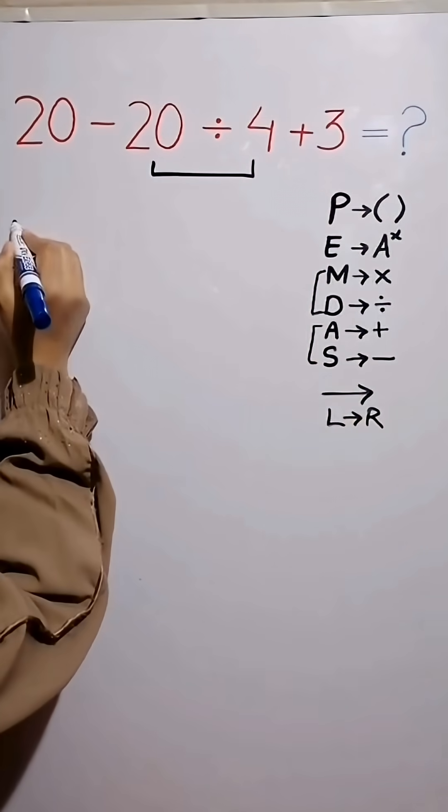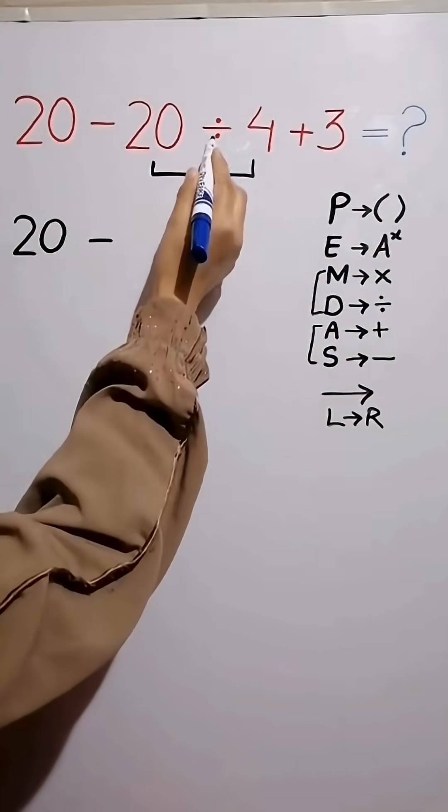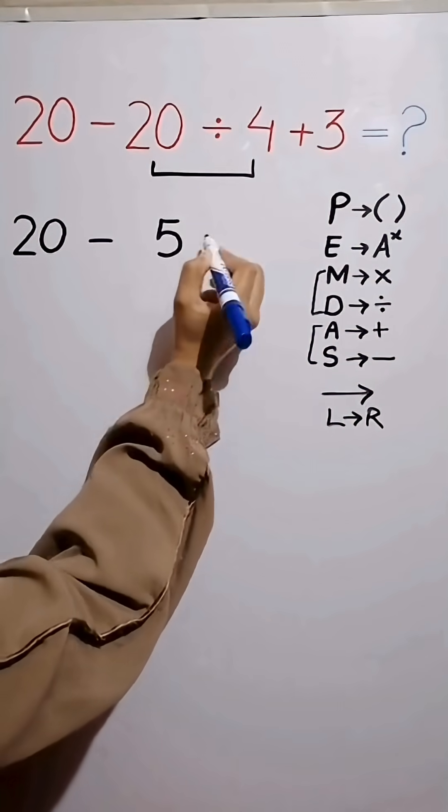Now this expression simplifies to 20 minus 20 divided by 4 equals 5, then plus 3.